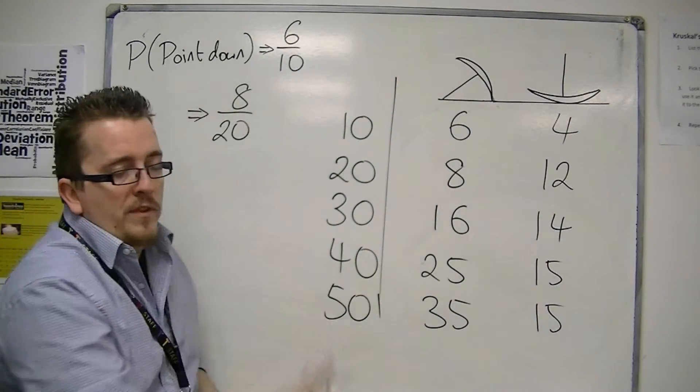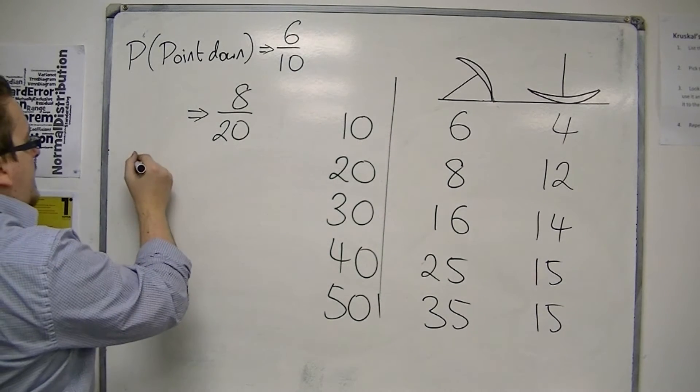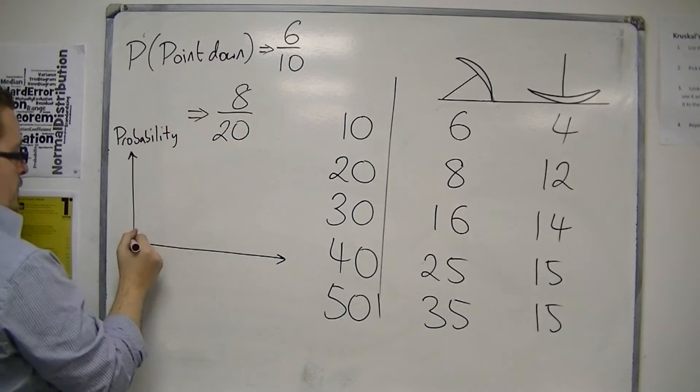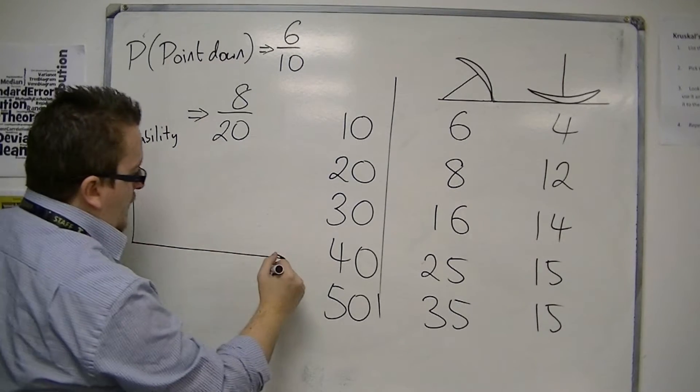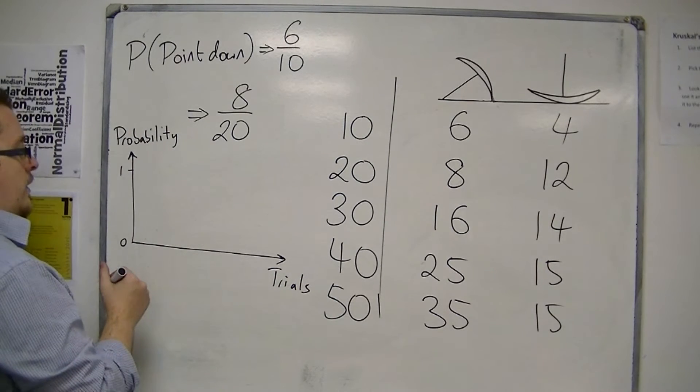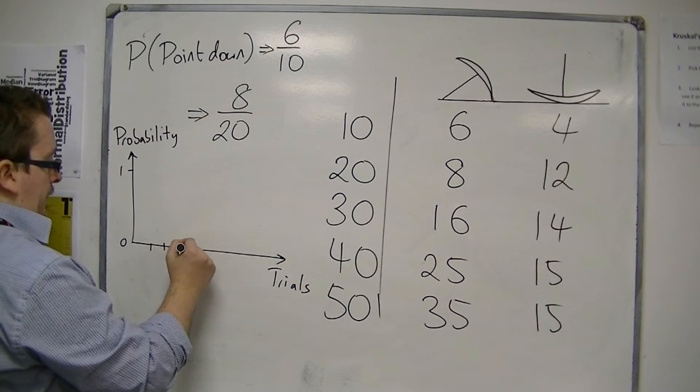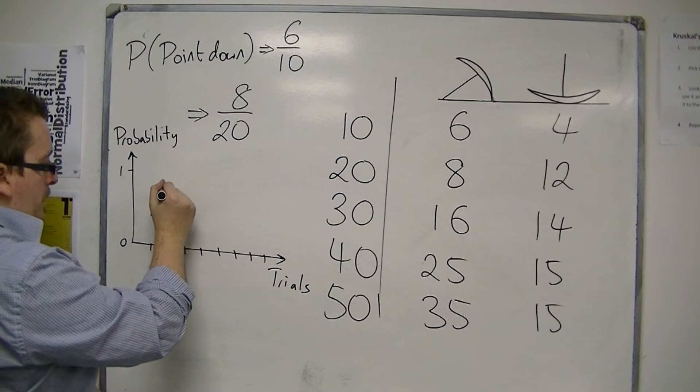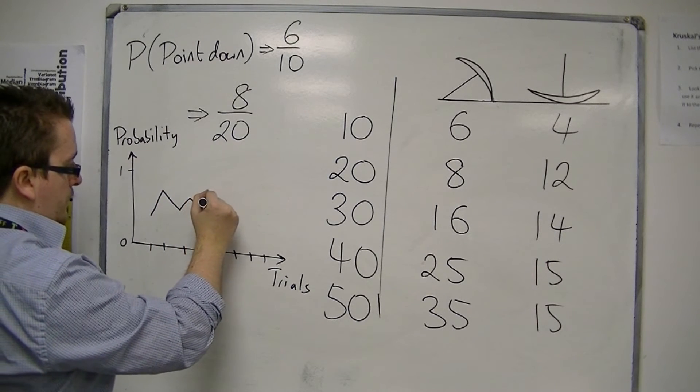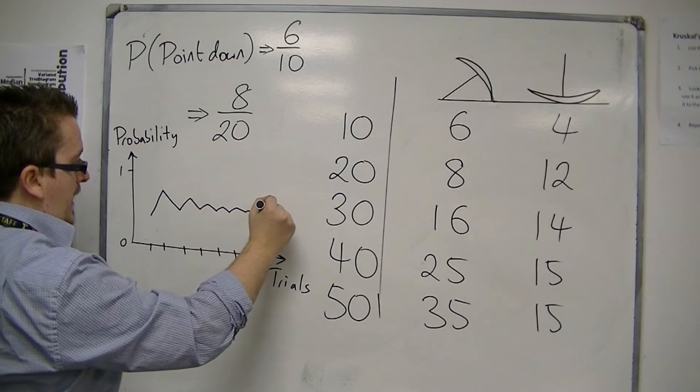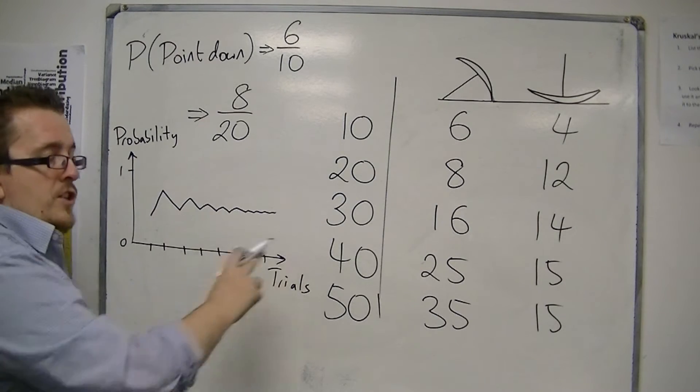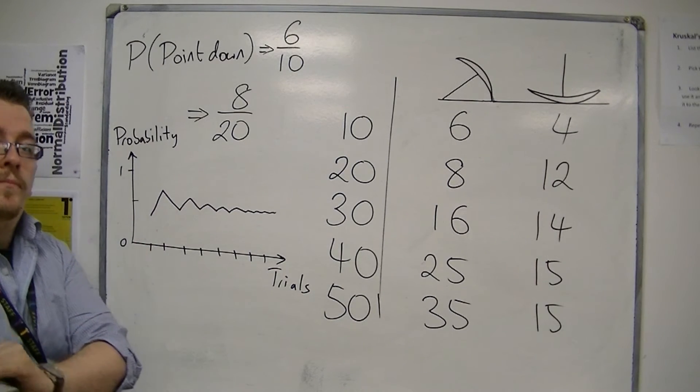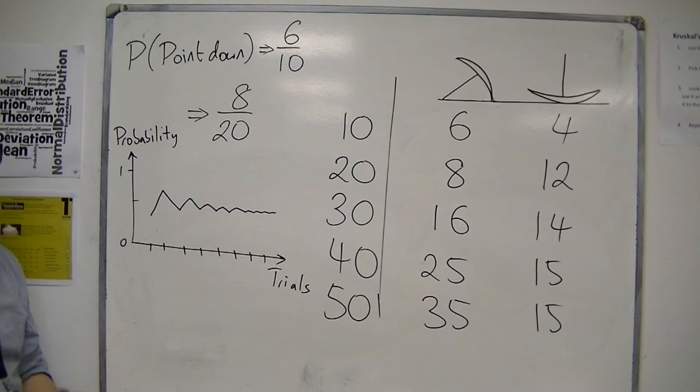Although I'm coming up with these numbers off the top of my head, you would expect that if you measured probability from zero to one and then the number of trials on the bottom, as the number of trials increases, you would expect that the probability would start off kind of quite jagged, but then it would start to fizzle and go towards a certain value. So the more trials you do, the more consistent it becomes. And this is the concept behind relative frequency.